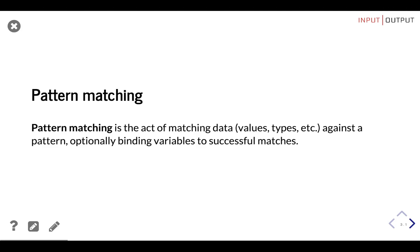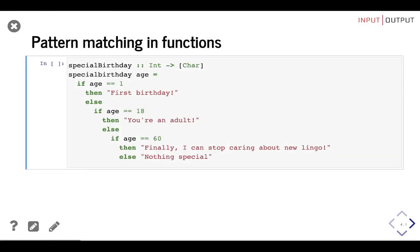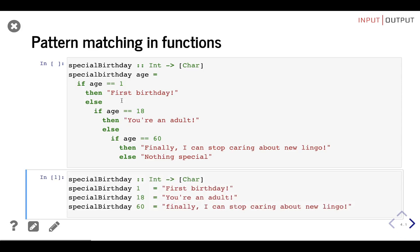Let's pattern match some functions. Remember the special birthday function from the last lesson? It's a function that takes an integer and returns a string, and according to the value of the integer does different things. To pattern match on function definitions, we just have to define the same function multiple times, replacing the parameters with the values we want. Here we define three different functions, and according to the value of the parameter we get three different results.